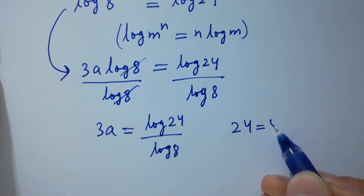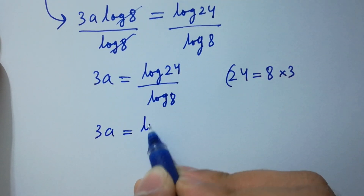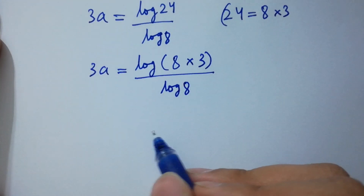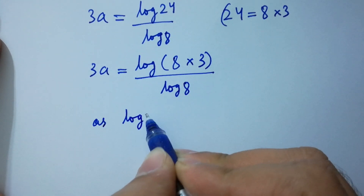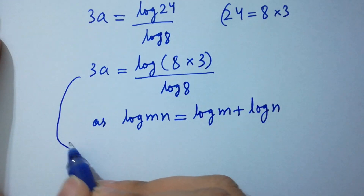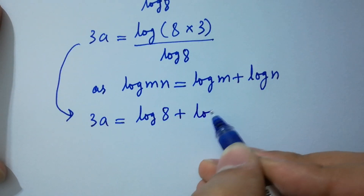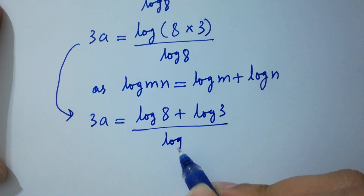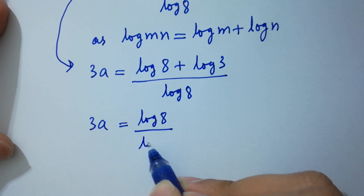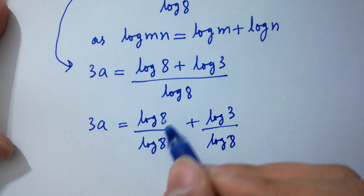Since 24 equals 8 times 3, we have 3a equals log of 8 times 3 over log 8. Using the log product rule — log(m×n) equals log m plus log n — this becomes 3a equals log 8 plus log 3 over log 8. Splitting the fraction: 3a equals log 8 over log 8 plus log 3 over log 8, and log 8 over log 8 cancels to 1.